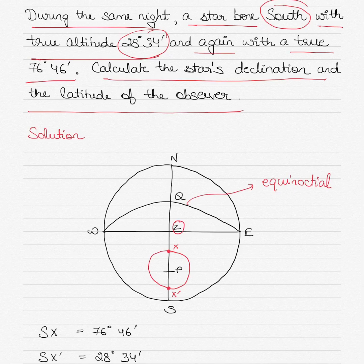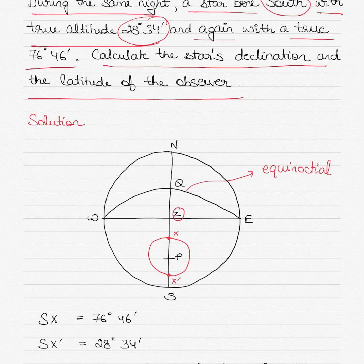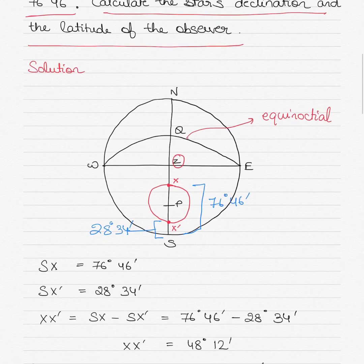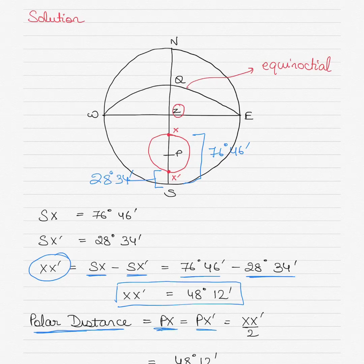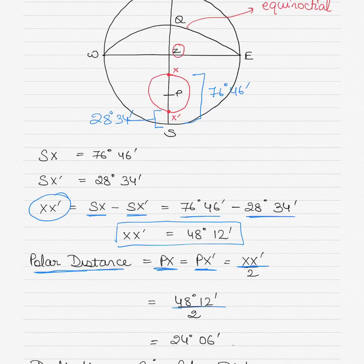SX is 76 degrees 46 minutes — the greater distance — and SX dash is 28 degrees 34 minutes. XX dash equals SX minus SX dash: 76 degrees 46 minutes minus 28 degrees 34 minutes gives XX dash as 48 degrees 12 minutes. Polar distance PX or PX dash equals half of XX dash. XX dash was 48 degrees 12 minutes, so halving gives 24 degrees 06 minutes as the polar distance equal to PX or PX dash.